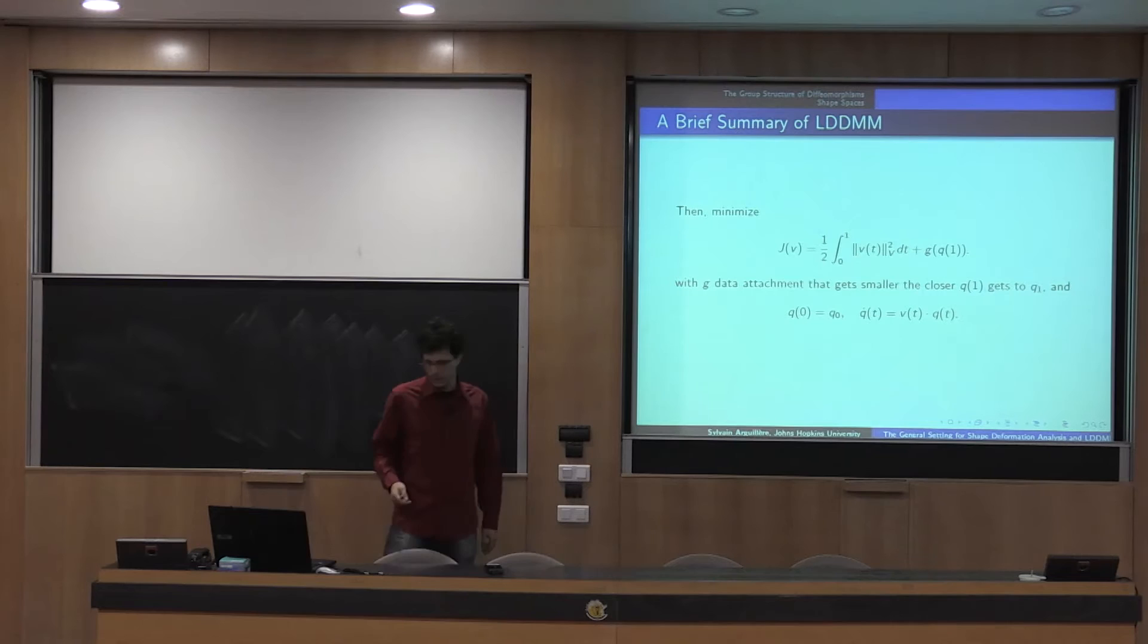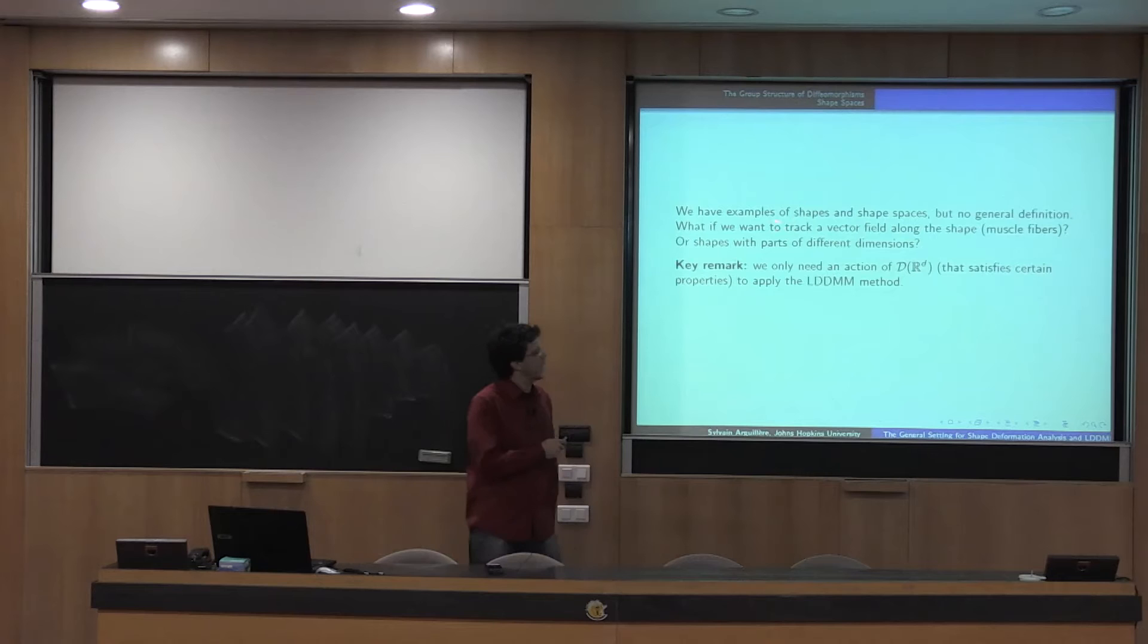And so we want to minimize this function over all control with integrable norm, an integrable square norm. And so we get just an optimal control problem. Okay, so the thing is, we have a lot of examples of shape spaces, but no real general definition. So I thought it would be kind of nice to get a unifying framework for this kind of work, for this method. So for example, what if we want to track a vector field along the shape that would represent a fiber or something. So that's basically obvious how you apply it, but in the end, like you have to do all the work once again, because it's not part of the well known examples. And same thing if you want like shapes with parts of different dimensions, like I don't know, a hairy ball or something.